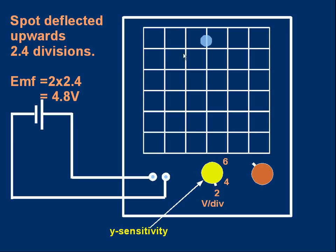Well, I hope you did it. That spot has shifted from the middle up here. We say it's been deflected. The deflection is one division, two divisions, and about 0.4 divisions, 2.4 divisions. Each division is two volts because that's the Y sensitivity setting. So the EMF, or the voltage of the cell, is two volts per division times 2.4 divisions. It's 4.8 volts. We've used the oscilloscope as a voltmeter.